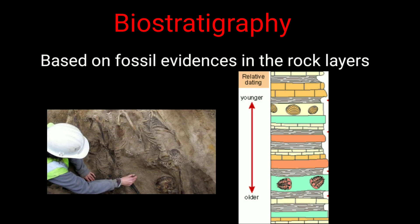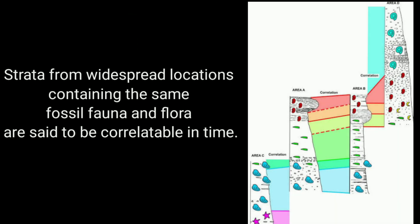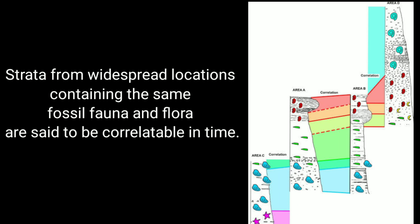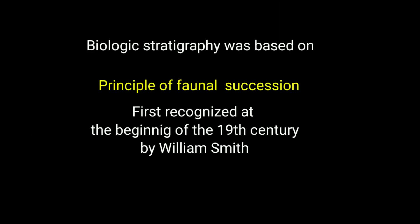Biostratigraphy, or paleontologic stratigraphy, is based on fossil evidence in the rock layers. Strata from widespread locations containing the same fossil fauna and flora are said to be correlatable in time. Biologic stratigraphy was based on the principle of faunal succession, first recognized at the beginning of the 19th century by William Smith.